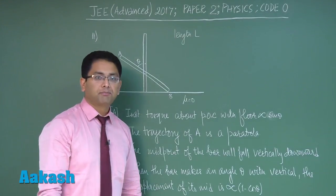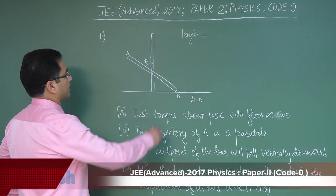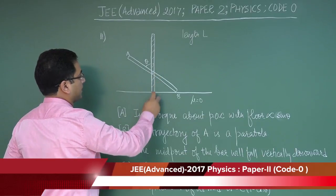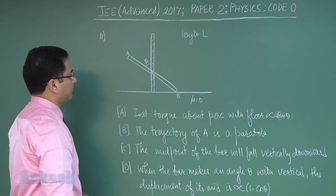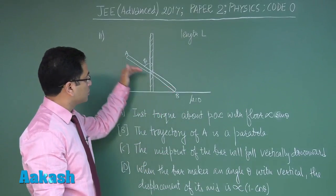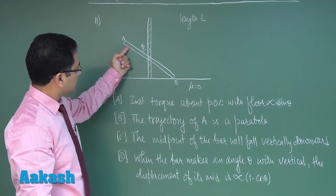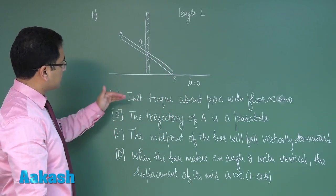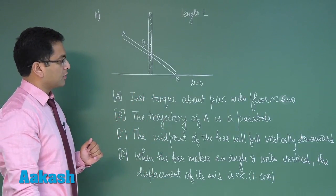Question number 11, picked from the topic rotation. There is a slender rod of length L standing vertically on a perfectly smooth surface. It starts slipping, and at any position it makes an angle theta with the vertical. On the basis of this, we need to determine which options are correct.